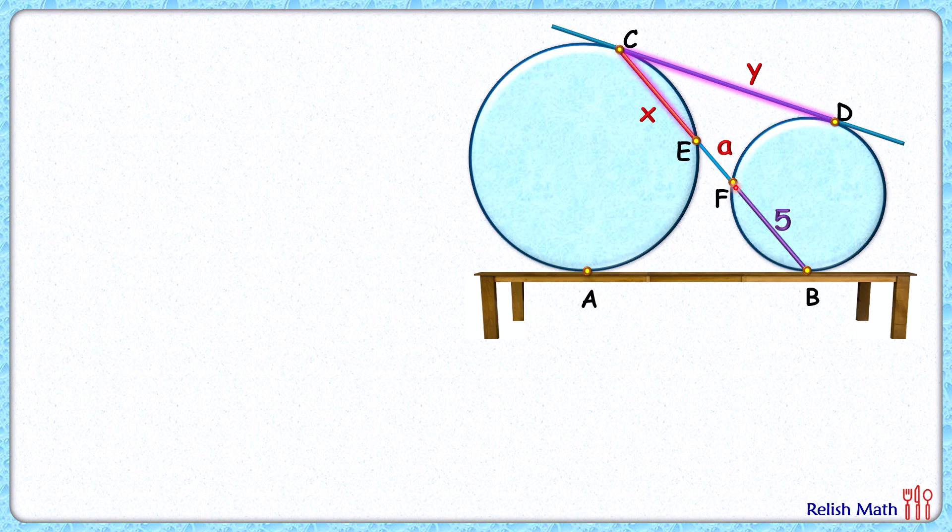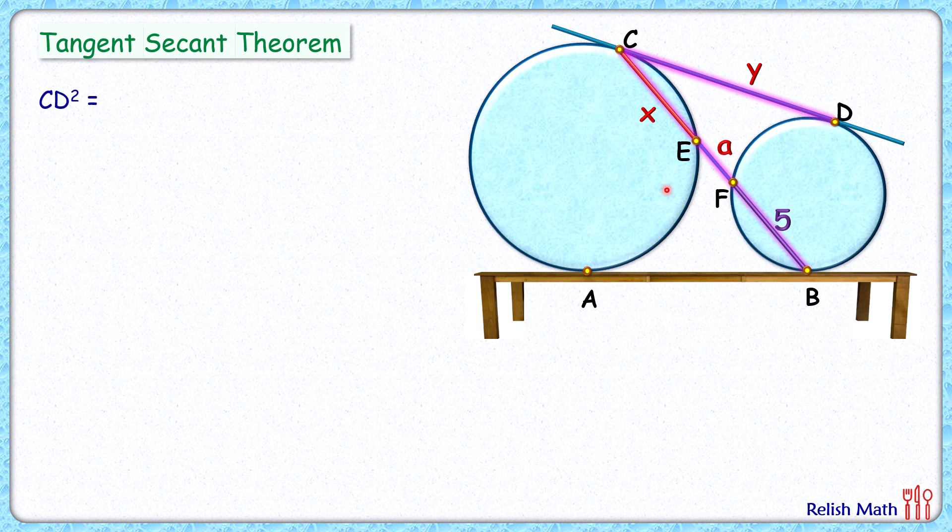And CB is the secant. Applying the tangent-secant theorem, we get CD squared is CF times CB. CD squared is y squared, CF is x plus a, and CB is x plus a plus 5. Let's call it observation number one.